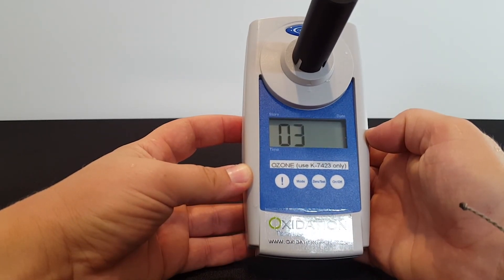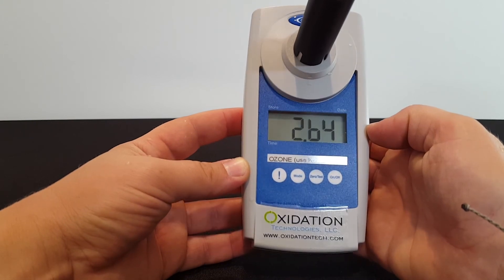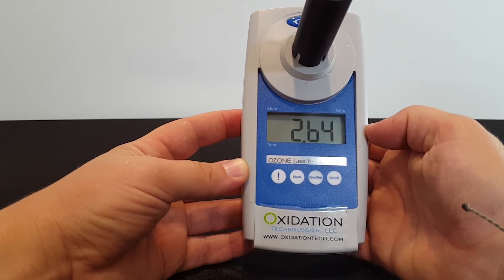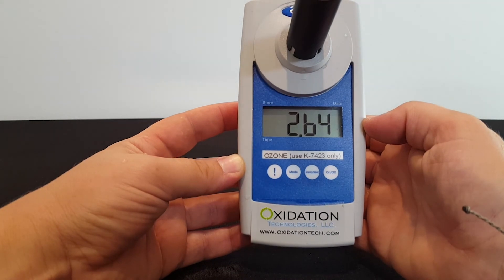The O3 symbol will flash for about three seconds, and then the reading will appear. In our test we have 2.64 ppm dissolved ozone in our sample.